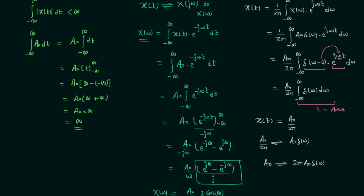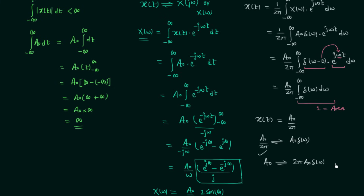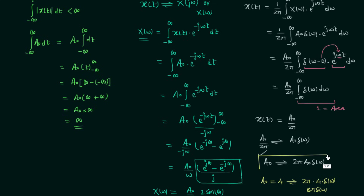We were trying to obtain the Fourier transform of signal A0, and we have found that the Fourier transform of A0 is equal to 2π A0 delta(ω). This is the Fourier transform of DC value A0. For example, if the DC value equals 4, then its Fourier transform is 2π times 4 times delta(ω), which equals 8π delta(ω). Remember: the Fourier transform of DC value A0 is 2π A0 delta(ω).